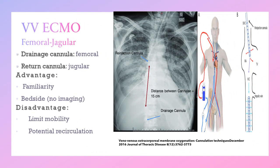Another form of veno-venous ECMO is femoral-jugular cannulation. The drainage cannula will be in the femoral vein, with the tip in the inferior vena cava at the level of the hepatic vein, and the return cannula will be in the internal jugular vein. Its advantages include familiarity and no requirement for imaging. The disadvantage is limited mobility and potential for recirculation. After inserting the cannula, an X-ray should be taken and the distance between the two cannulas should be measured — it should be at least 15 cm.